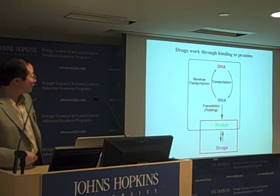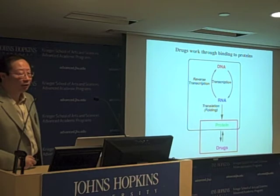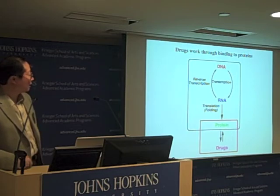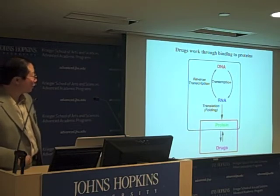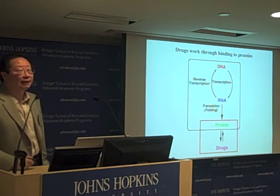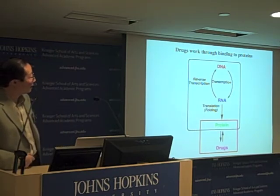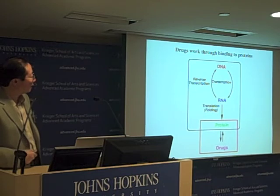In human cells, we know we have at least three major classes of large macromolecules. They include DNA, RNA, and proteins. The majority of drugs that we have today work by binding to proteins, which are the working horses in cells. DNA is the information-encoding molecule, and RNA helps in part to convert the information encoded in DNA into protein molecules.